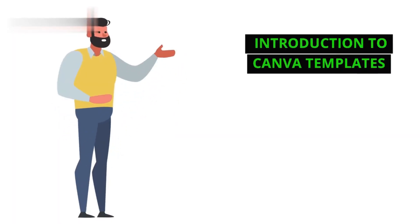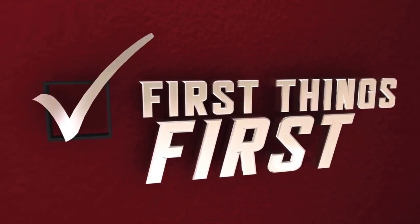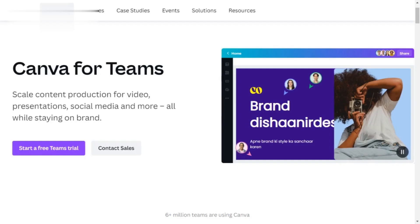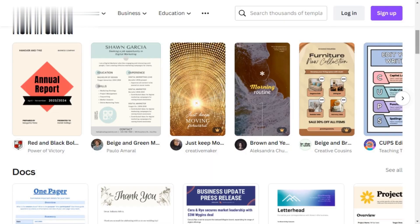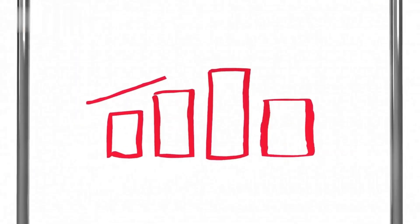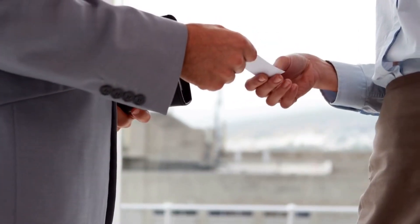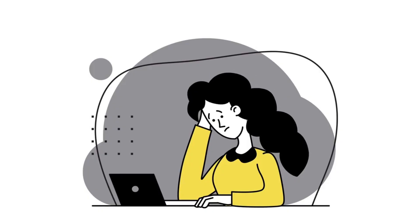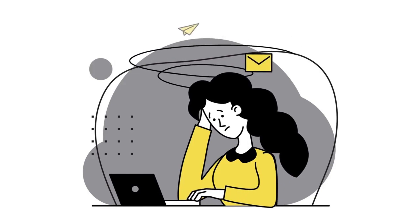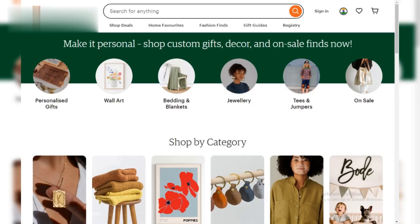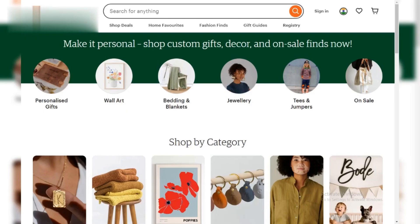Introduction to Canva templates. What are Canva templates? Canva is a user-friendly graphic design platform that allows you to create stunning designs with ease. Templates are pre-designed layouts that users can customize for their specific needs, whether it's social media graphics, invitations, or business cards. The great thing about Canva templates is that they're versatile and customizable, making them perfect for selling on platforms like Etsy.